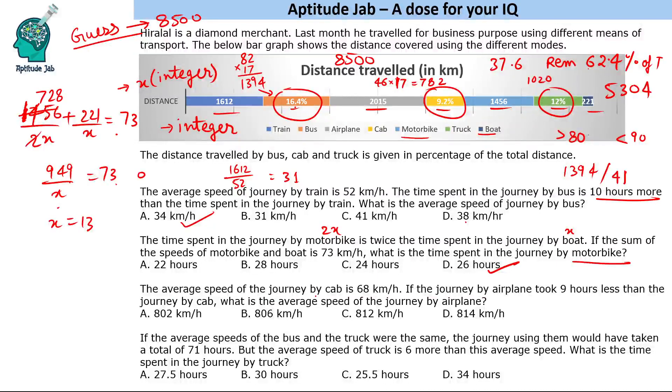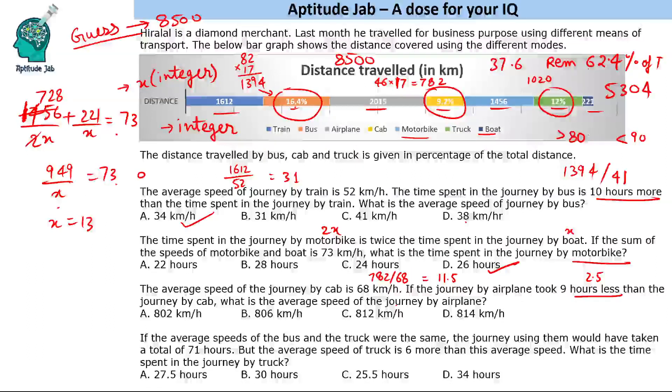Next question is, the average speed of the journey by cab is 68 km/h. If the journey by airplane took 9 hours less than the journey by cab, what is the average speed of the journey by airplane? So journey by cab is 68, so that is 782 by 68, that gives you 11.5. Journey by airplane took 9 hours less, so journey by airplane took 2.5 hours. Journey by plane is 2015. 2015 by 2.5, so 2000 will give you 800 and 15 gives you 6, so 806 will be the answer.